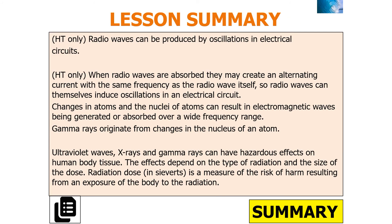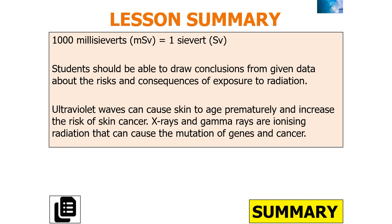In summary: radio waves can be produced by oscillations in electrical circuits, and when absorbed they create an alternating current with the same frequency as the radio wave. Changes in atoms and nuclei can result in electromagnetic waves being generated or absorbed over a wide frequency range. Gamma rays originate from changes in the nucleus. Ultraviolet waves, x-rays, and gamma rays can have hazardous effects on human body tissue. Radiation dose in sieverts measures the risk of harm, where 1000 millisieverts equals one sievert. Ultraviolet waves can cause skin to age prematurely and increase the risk of skin cancer, whilst x-rays and gamma rays are ionizing radiation that can cause mutation of genes and cancer.